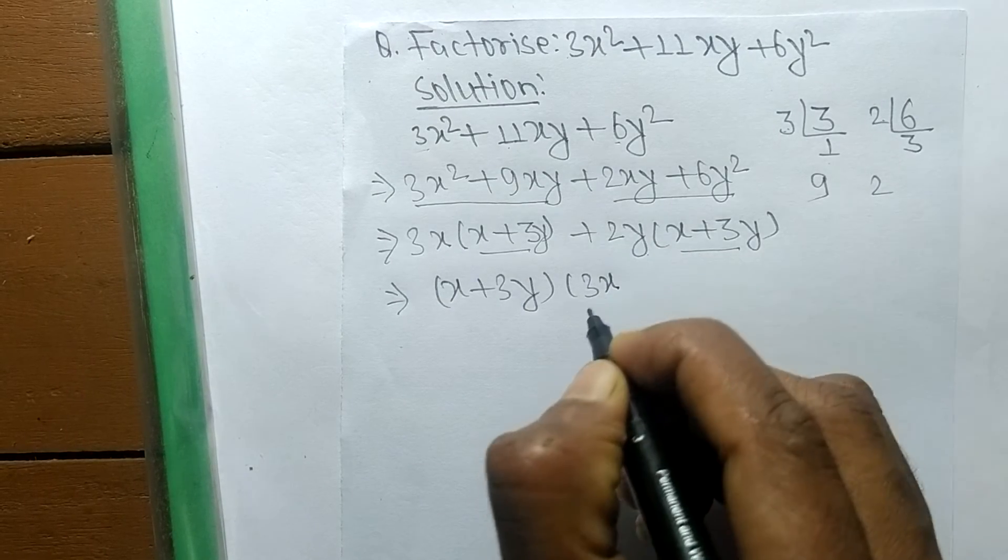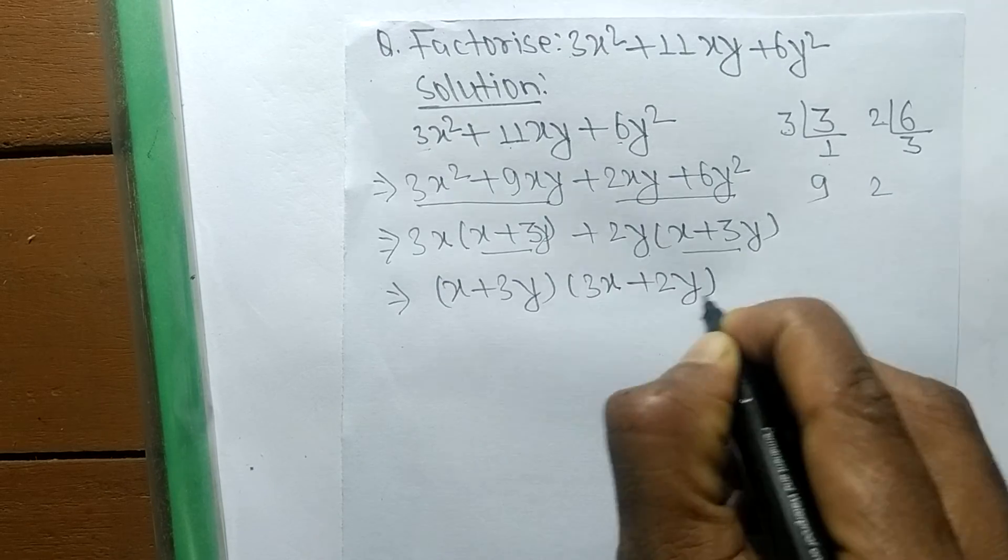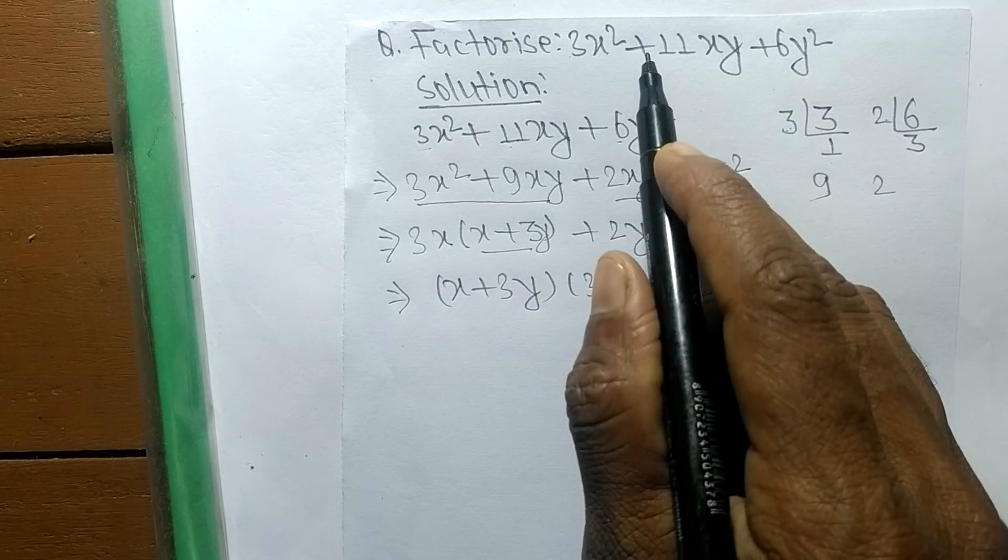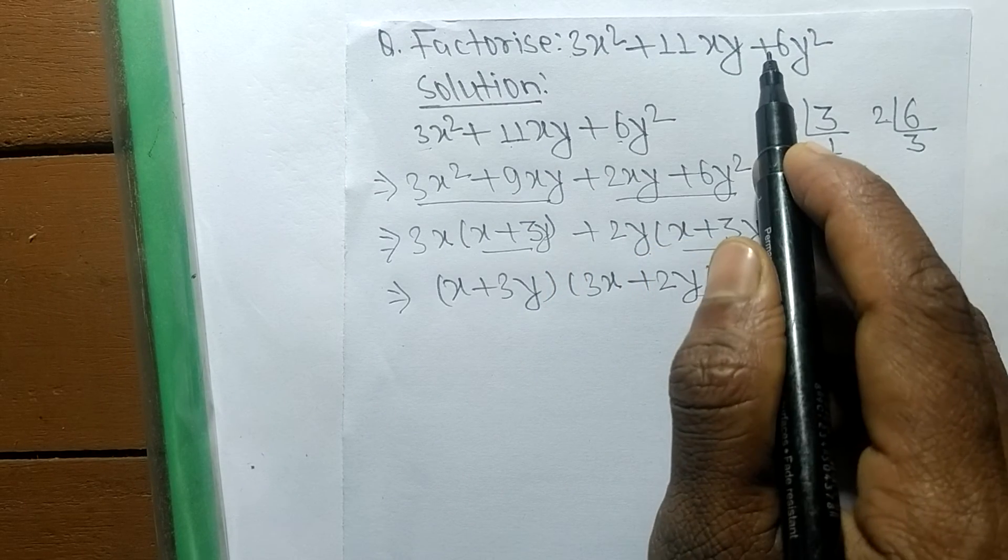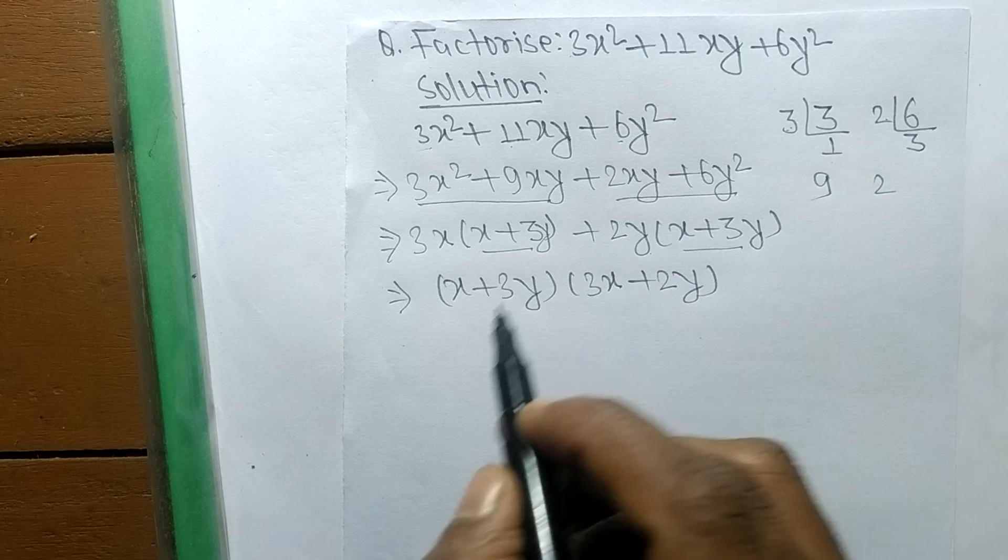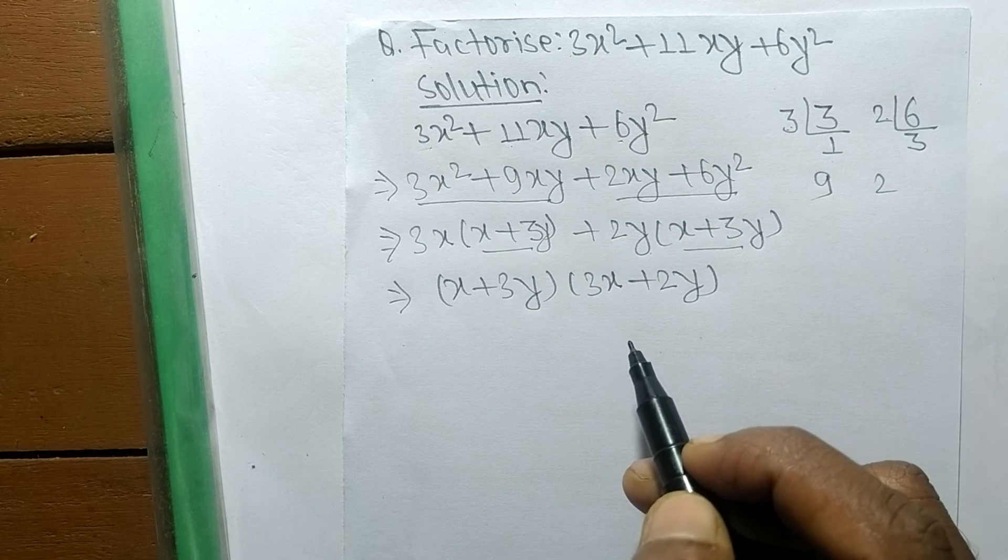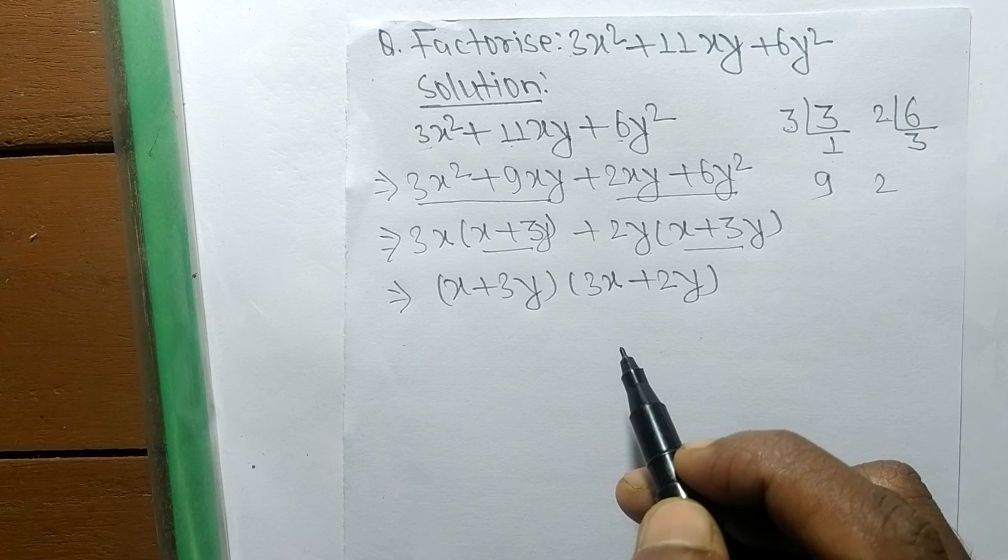So the factors of 3x² + 11xy + 6y² are (x + 3y) and (3x + 2y). That's all for today.